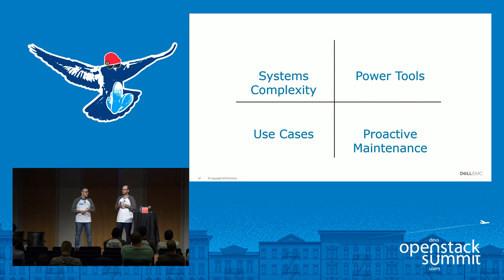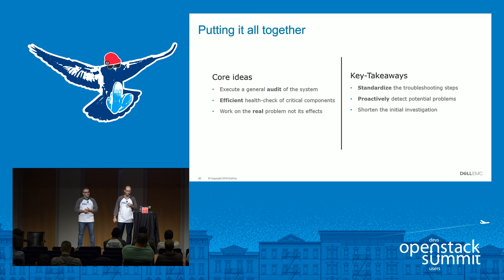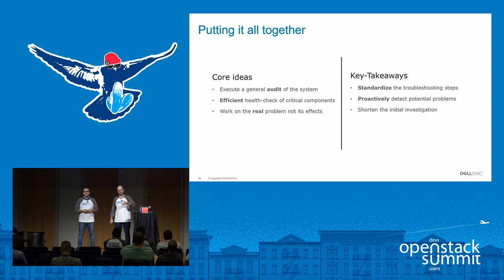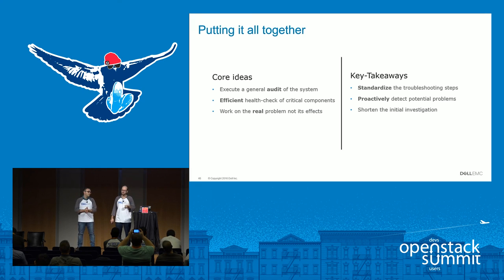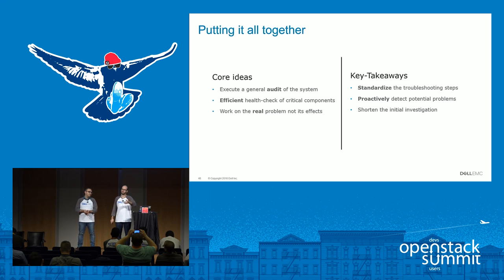Going back to what we laid out today as a foundation — we talked about systems complexity, power tools, went through a use case, and talked about proactive maintenance. To put it all together: we want to be able to do a general audit of what we have. Time is usually the enemy — you want to be efficient in knowing what's behaving well, what's not, and get to the core of the problem instead of just fighting fires. Get a standard for troubleshooting such as the ELK stack, be proactive as much as you can, and get ready to shorten the initial investigation.